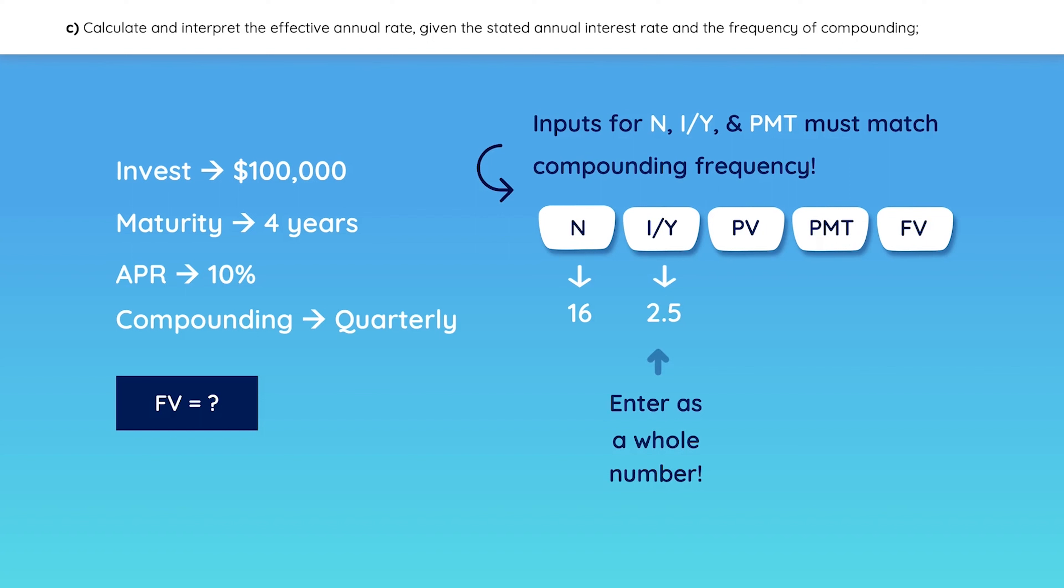The present value is $100,000, and don't forget to make it negative because it's a cash-out flow. When money leaves your wallet, it's a negative cash flow. Whenever you earn money back, it's a positive cash flow.